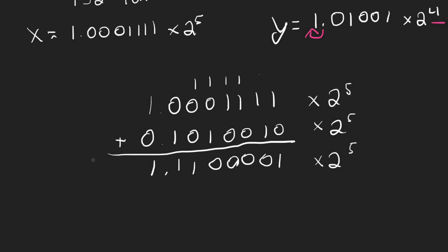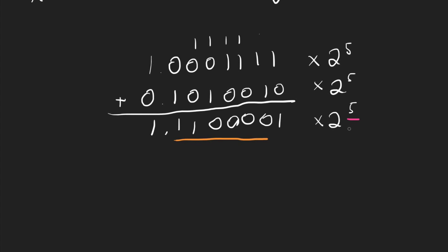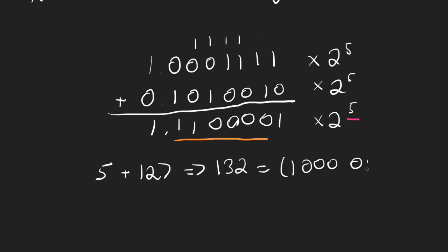Now we can easily take this representation because we have all of our components. We have our exponent, and the mantissa is the part underlined here, and our sign is going to be 0 because our answer is positive. The next thing we need to do is account for the bias in our exponent — we take 5 and add 127 to get 132, which equals 10000100 in binary.